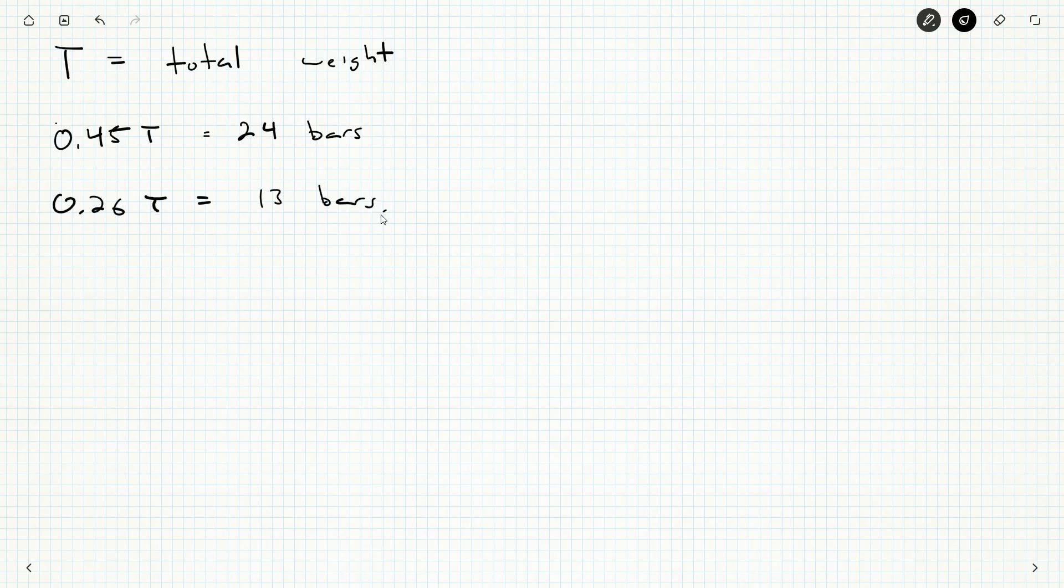I suppose I could figure out the average weight of the bars. Not entirely sure that would be helpful. But I guess the average weight of each of the heaviest bars is going to be 0.2T. And the average weight of the lightest bars is going to be 0.45 divided by 24, which is not a nice number. Let's see if we can clean that up a little bit.